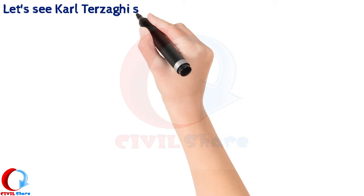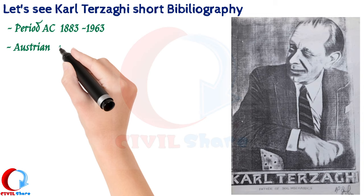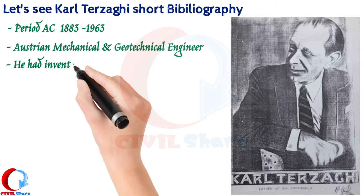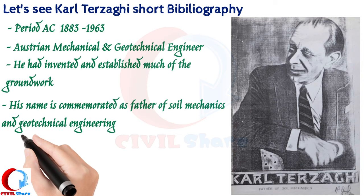Karl Terzaghi's short bibliography: He lived in the period of 1883 to 1963. He is called an Austrian mechanical and geotechnical engineer. He invented and established much of the groundwork, and his name is commemorated as the father of soil mechanics and geotechnical engineering.